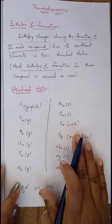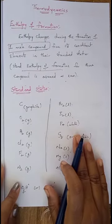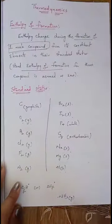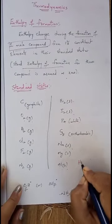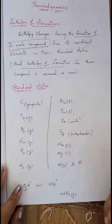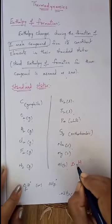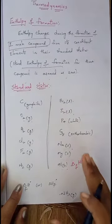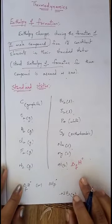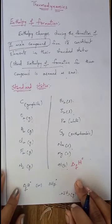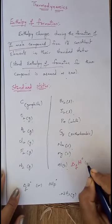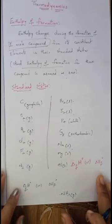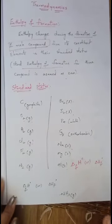Now we will see how to represent enthalpy of formation. Enthalpy is indicated by H, and change in enthalpy is indicated by delta H. For formation, we write it as delta_f H. If it is at standard condition, we add a naught symbol, giving delta_f H⁰. Alternatively, it can also be represented as delta H_F naught. This is the symbol used to represent standard enthalpy of formation.